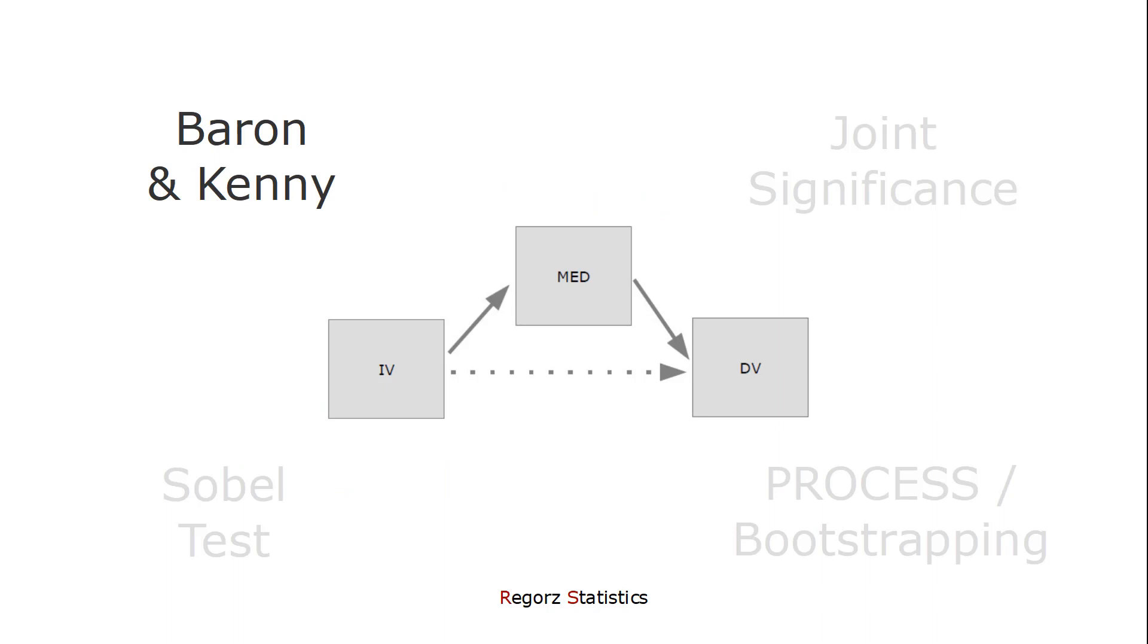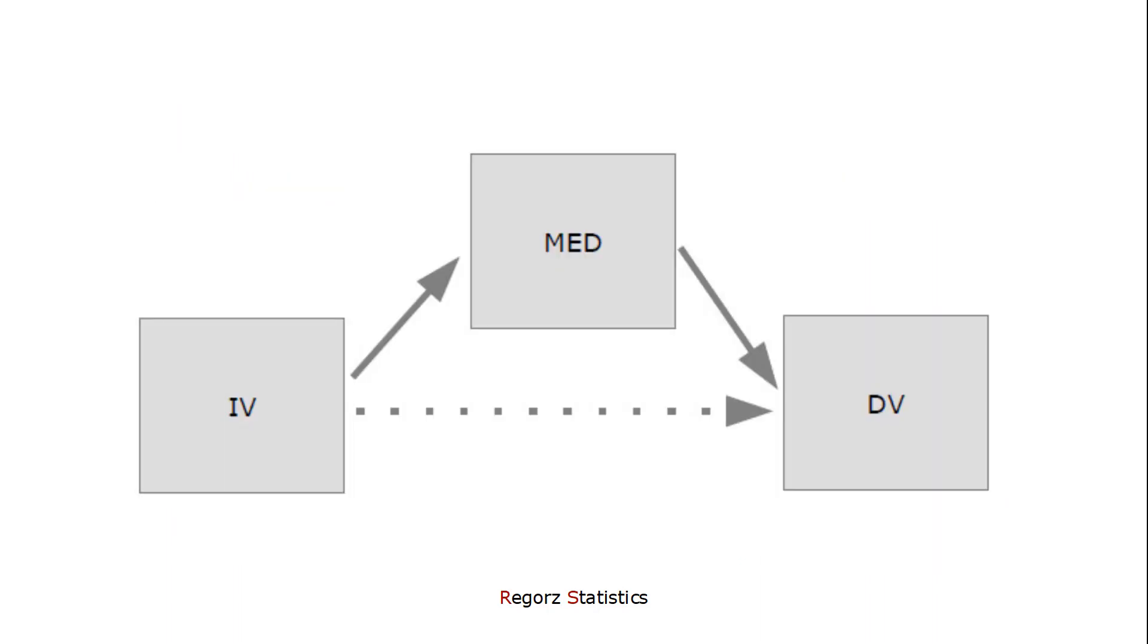Now let's look at the four techniques for testing mediation, starting with Baron and Kenny. The causal steps approach tests four conditions in three regression models. The first condition is that there is a total effect from the independent variable to the dependent variable. The second condition is that there is an a path from the independent variable to the mediator. And the third and fourth conditions are tested together. The third condition is that there is a b path from the mediator to the dependent variable. And the fourth condition is that controlling for the mediator that direct effect from the independent variable to the dependent variable isn't there anymore. That would be a total mediation or at least decreases compared to the total effect. That would be a partial mediation.